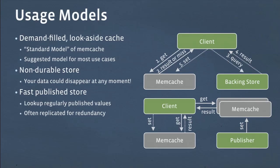There are a few ways that we use Memcached here at Facebook. I'll talk about the three primary ones. The one that we encourage most people to use is as a demand-filled look-aside cache. This is what I call the standard model of Memcached. It works really well, it's proven at scale, and it deals with any consistency issues that can come up. In this model, the client will send a get to Memcached. Either the result will come back, in which case the client is good to go — that's a normal case.